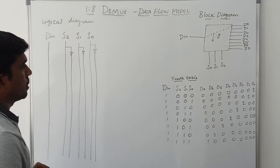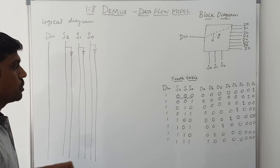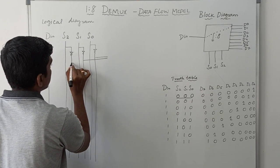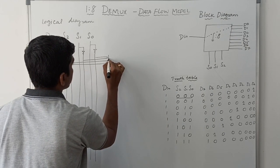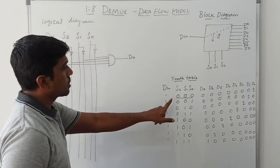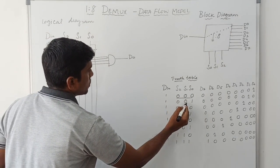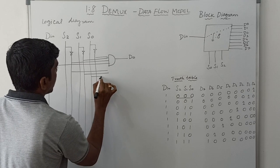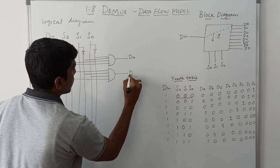For the first combination, S2=0, S1=0, S0=0 - I will take the connections of not-S2, not-S1, not-S0, and DIN into an AND gate. The output of the AND gate is D0. So in this combination, DIN is connected to D0.